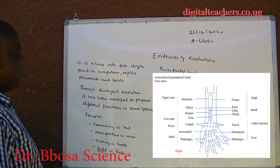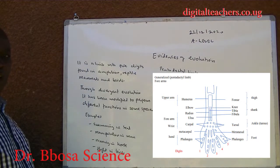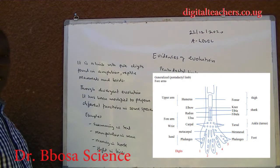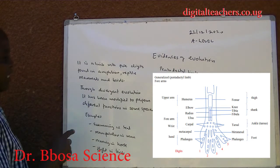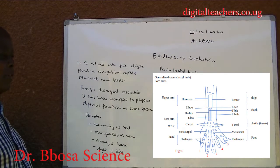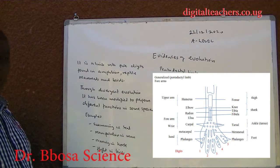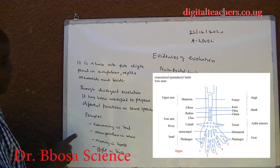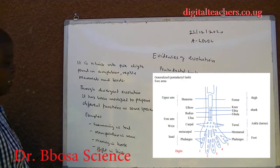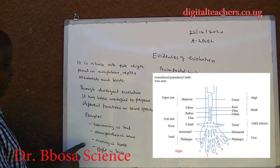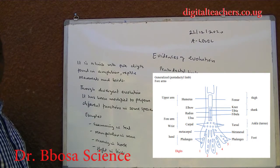The pentadactyl limb is a limb with five digits, found in amphibians, reptiles, mammals and birds. Through divergent evolution, it has been modified to perform different functions in some species. For example, swimming in seals, manipulation in man, running in horses, and flight in birds.